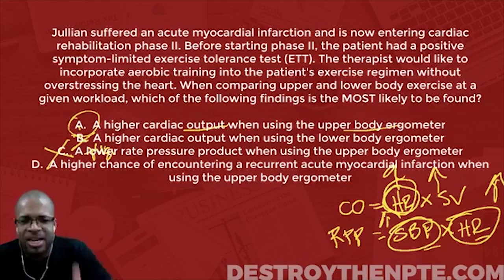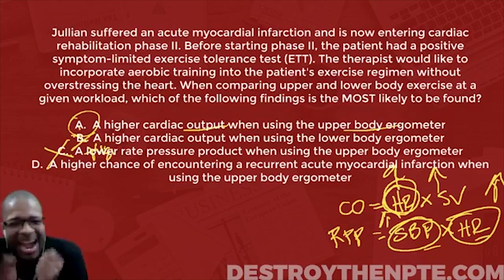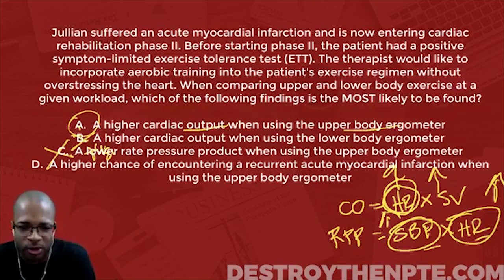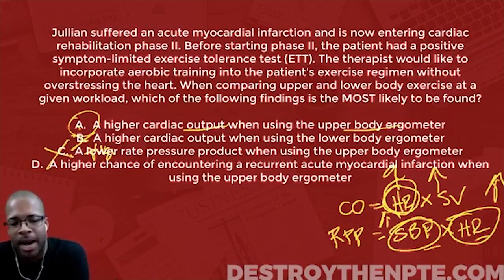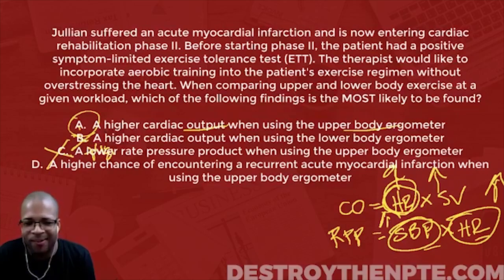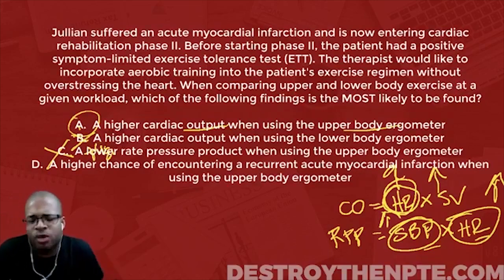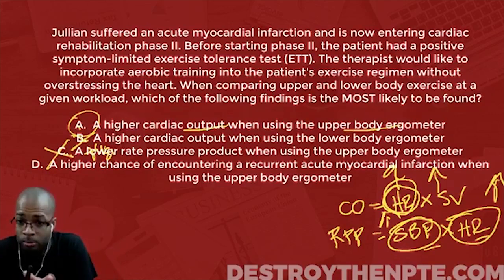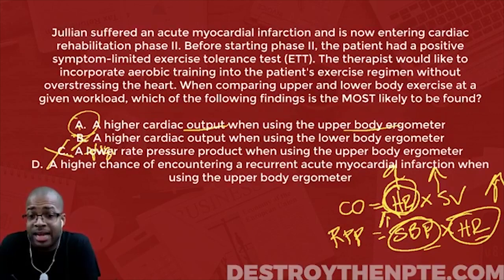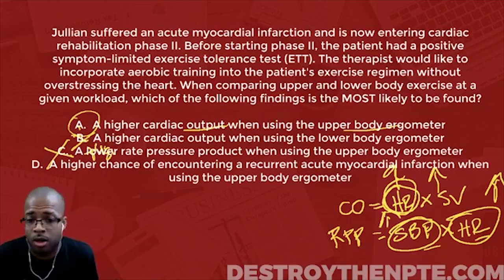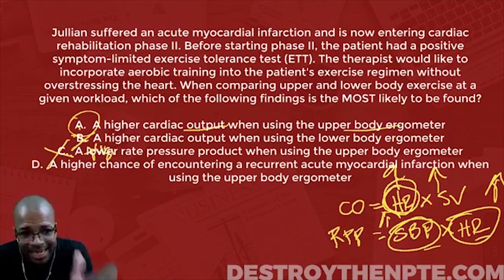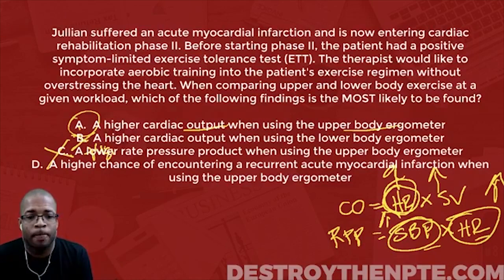Now let's look at D. D says a higher chance of encountering a recurrent acute myocardial infarction when using the upper body ergometer. True or not true? I believe this to also be true — if you're using the upper body ergometer, the upper body ergometer increases the level of stress on the heart at a given workload compared to the lower body. That means since I'm increasing the level of stress on the heart, there's a higher chance of running into a recurrent myocardial infarction. So there is a higher chance of that at a given workload. This is a true answer.